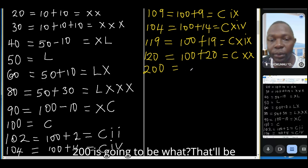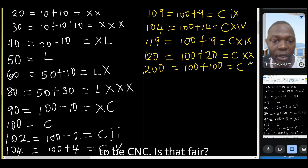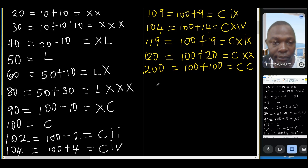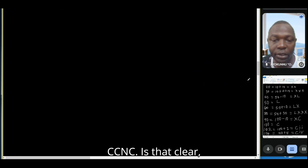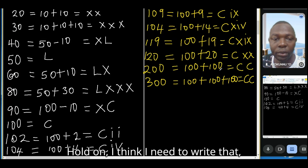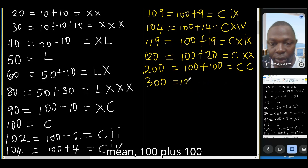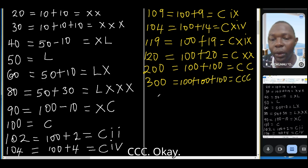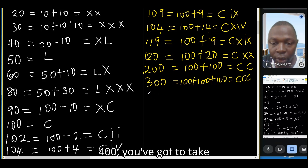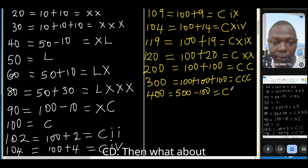Two hundred is 100 plus 100, which is CC. Three hundred is CCC. Four hundred is 500 minus 100 — since 500 is D, that gives CD.